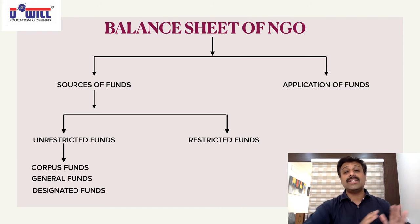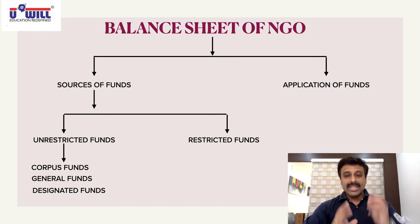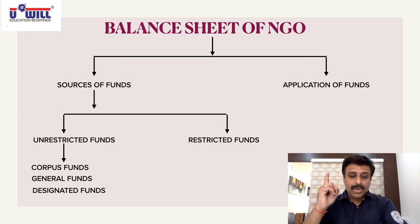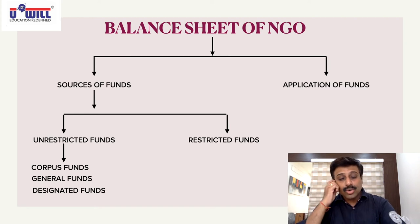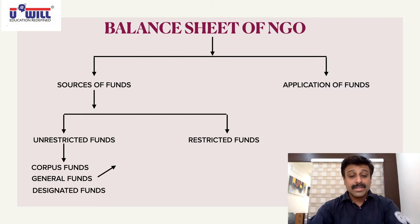So within unrestricted funds, there are three categories: corpus fund, general fund, and designated fund. Within general fund, there are further two parts.